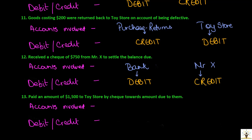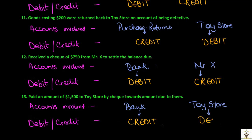Transaction: pay an amount of $1,500 to toy store by cheque towards amount due to them. We have a bank account as the amount is paid by cheque, and toy store. Since amount is being paid to toy store, the bank balance is decreasing — hence bank account will be credited. And toy store is a liability, and liability is decreasing — hence it will be debited.